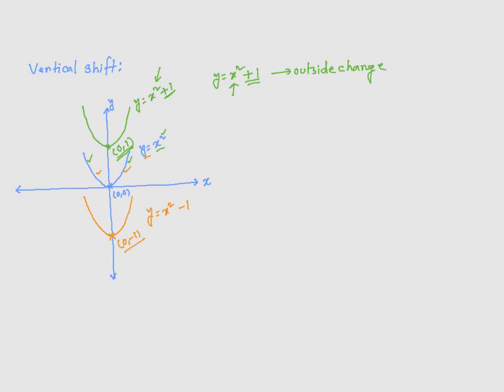Now, once again, this subtraction of 1 is from the x squared. That's an outside change. Remember that. It's not an inside change. It's not a change inside the square. So, this is an outside change.